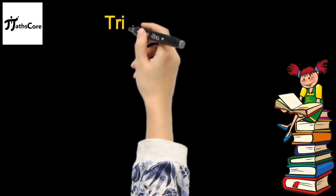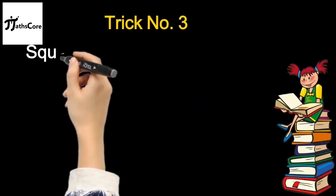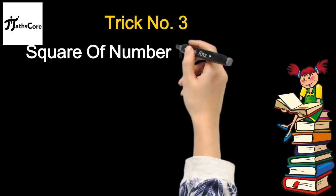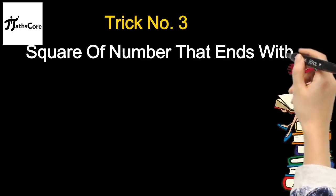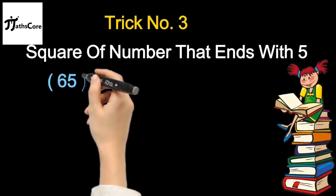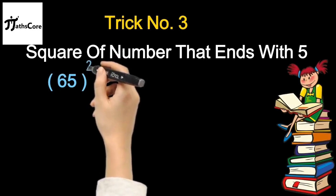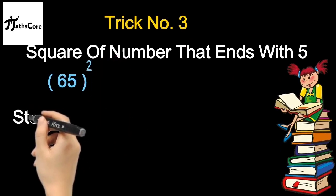I hope you have enjoyed previous tricks. Without wasting our time let us learn about trick number 3. That is square of numbers that end with 5. Example is 65 square. Here also you need to follow 2 steps.